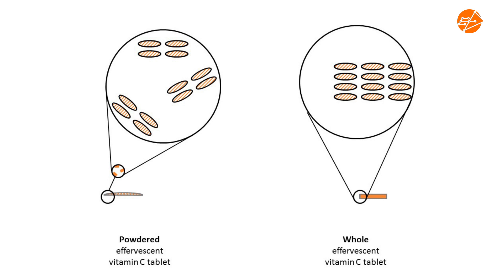How many citric acid molecules are exposed to water in the tablet and the powder? For the same number of molecules, more citric acid molecules are exposed to water in the powder than in the tablet. Another way of describing this is that for the same mass, the powder has greater surface area than the tablet. This means that the likelihood of a successful collision between the citric acid molecules and water molecules is more likely when the tablet has been crushed to a powder.